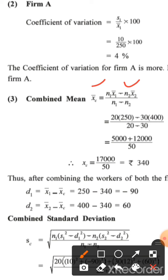Substituting the values: numerator = (20 × 250) + (30 × 400) = 5,000 + 12,000 = 17,000; denominator = 20 + 30 = 50. Dividing gives the combined mean of ₹340. So the combined mean for the two firms is ₹340.